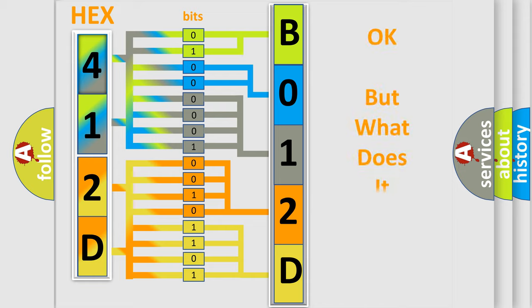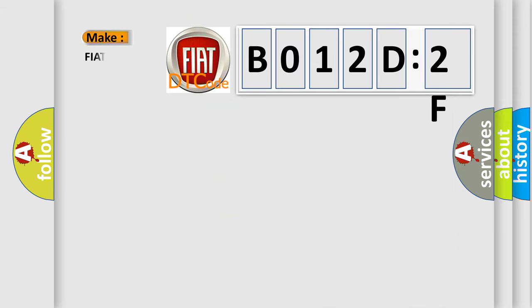We now know in what way the diagnostic tool translates the received information into a more comprehensible format. The number itself does not make sense to us if we cannot assign information about what it actually expresses. So, what does the diagnostic trouble code B012D2F interpret specifically for Fiat car manufacturers?